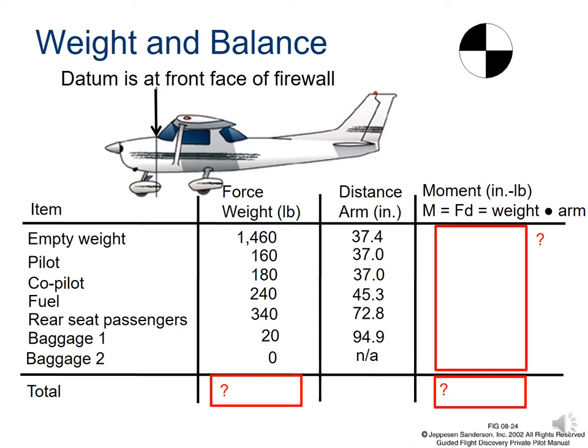Take a minute to multiply through and calculate the moment due to each item. We will simply add up the total force on the plane as well as the total moment, arriving at a total force of 2,400 pounds and a total moment of about 105,000 pound-inches.